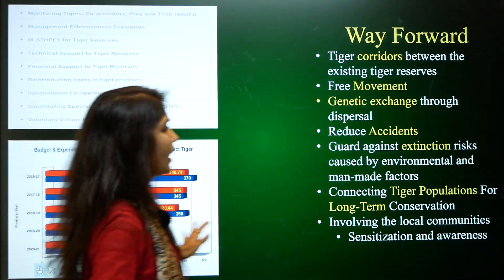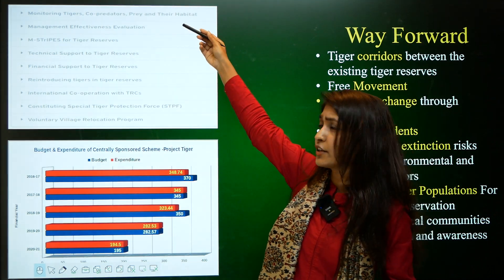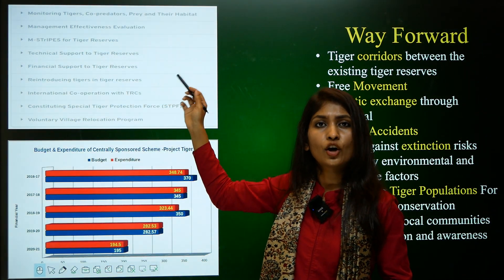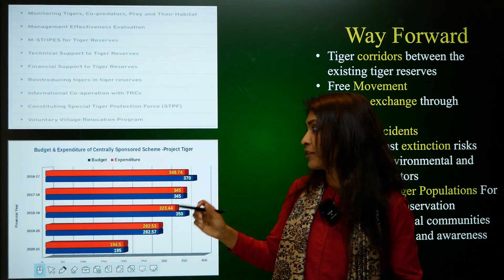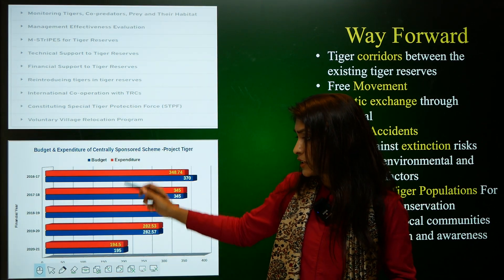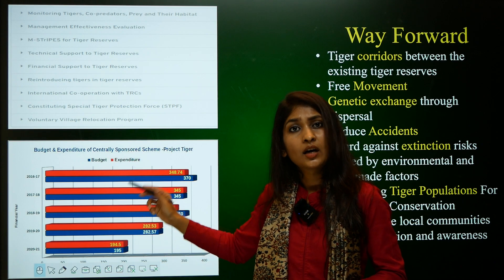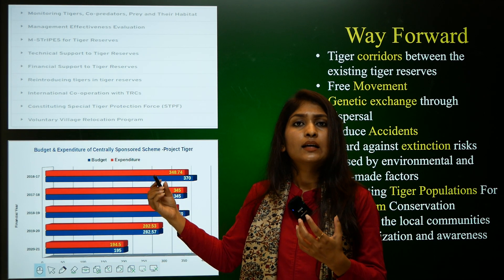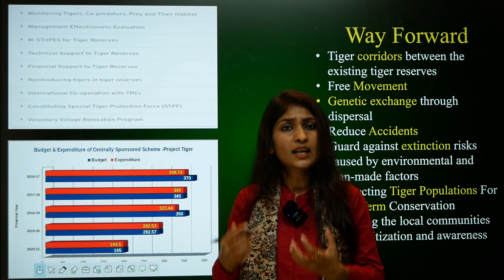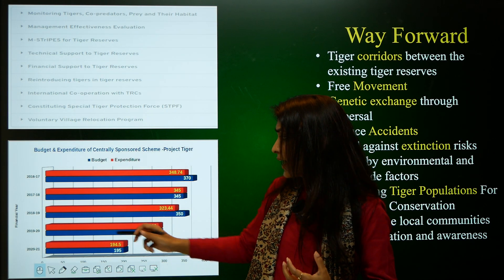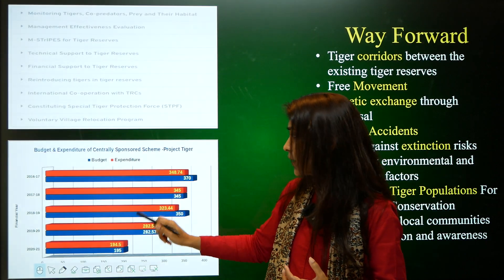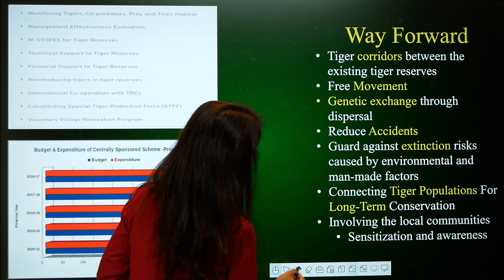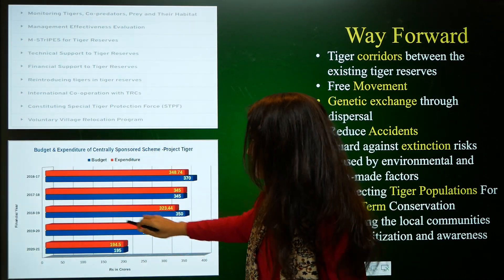The basic function of the Wildlife Institute of India is to conduct training programs and academic courses in order to bring up standards for research and wildlife management. The budget allocation shows more than 90% utilization for conservation steps undertaken in India — a good indicator of effective fund usage that has contributed to great success.